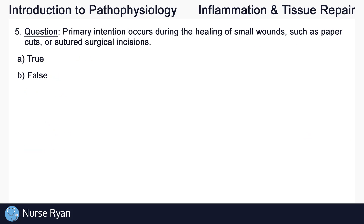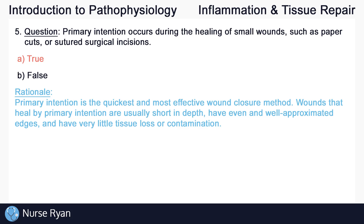Question number five: primary intention occurs during the healing of small wounds, such as paper cuts or sutured surgical incisions. The answer here is A, true. Primary intention, also known as primary closure, is the quickest and most effective wound closure method compared to secondary and tertiary intention. Wounds that heal by primary intention are usually short in depth, have even and well-approximated edges, and have very little tissue loss or contamination.